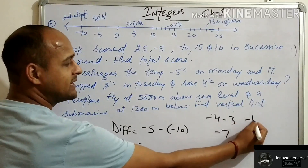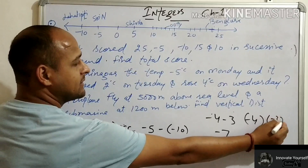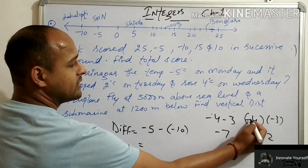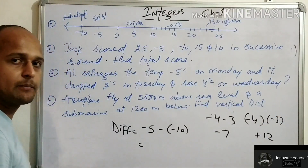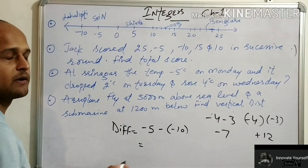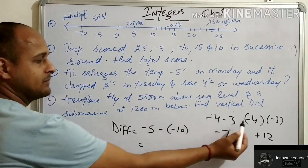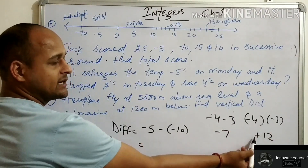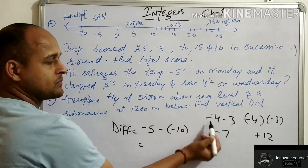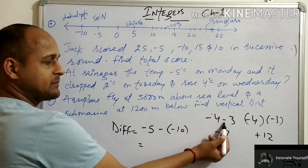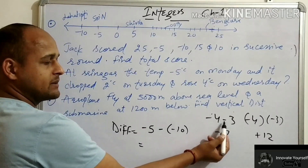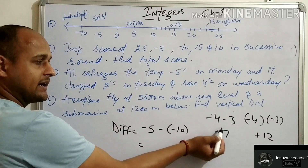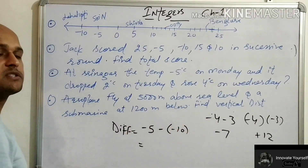But if we multiply: 4 times 3 is 12, and minus times minus gives plus. For multiplication, we only check same sign or opposite sign. For addition and subtraction with the same sign, we add and keep that sign; with opposite signs, we subtract and keep the sign of the greater number.